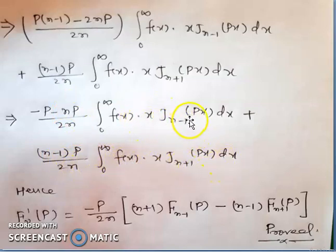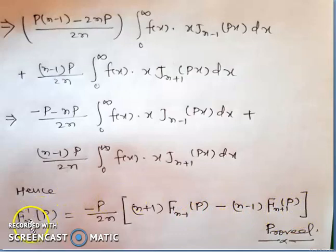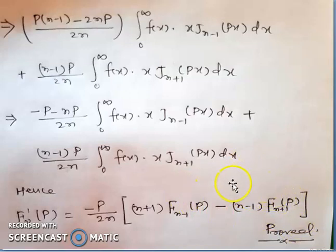By the definition of the Hankel transform, this result can be written as: fn'(p) = -p/(2n) * [(n+1)*f_{n-1}(p) - (n-1)*f_{n+1}(p)]. So this is the first derivatives of the Hankel transform.